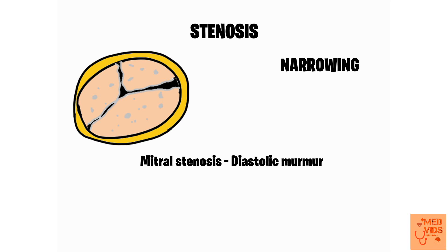Individual valve lesions produce different murmurs. For example, mitral stenosis produces a diastolic murmur. In this video I'm focusing on whether the murmur occurs during systole or diastole; the exact timing and other sounds — like the opening snap, splitting of A2, and splitting of S2 — will be covered in the individual valvular heart disease videos.